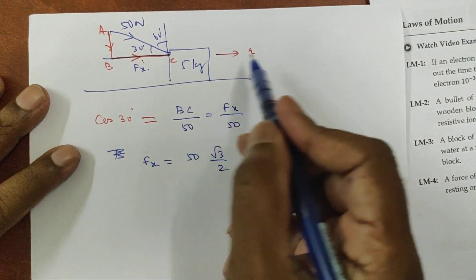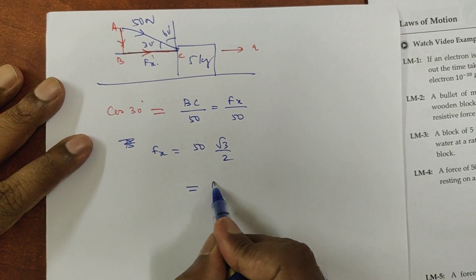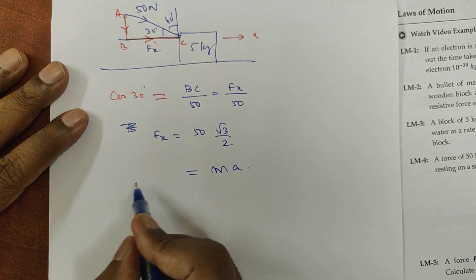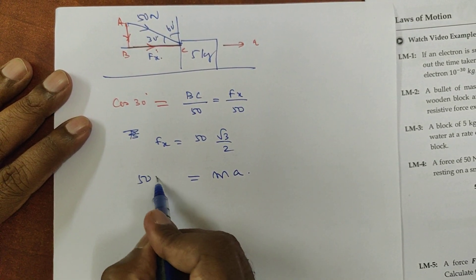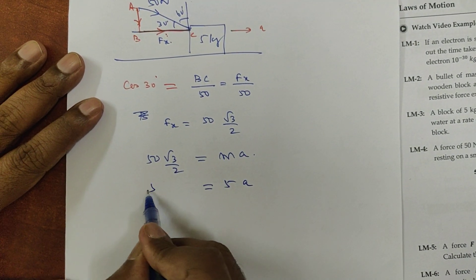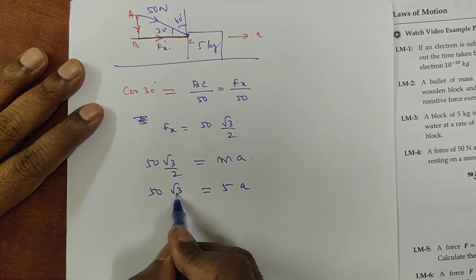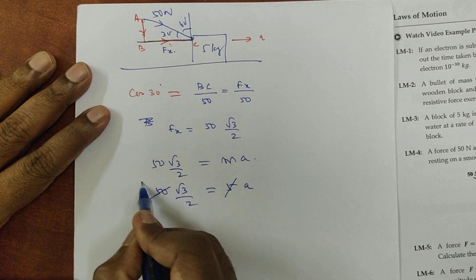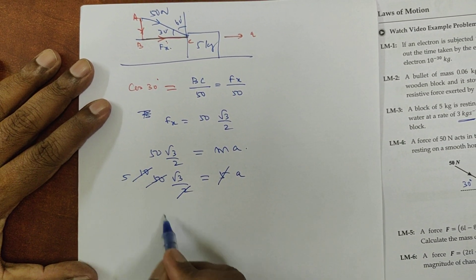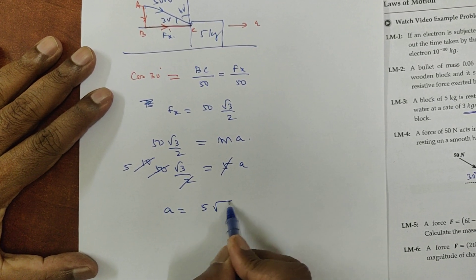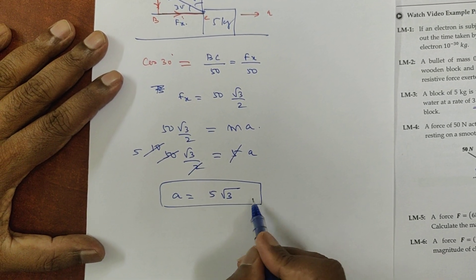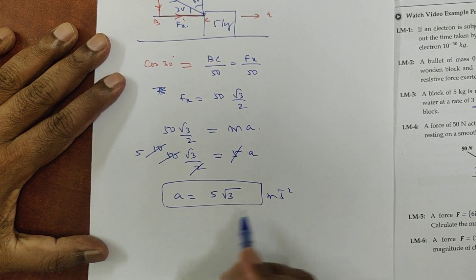Using F = ma: 50 × (√3/2) = 5 × a. Simplifying, a = (50√3/2) / 5 = 5√3 meters per second squared. So we have completed question number 4.